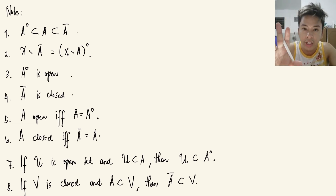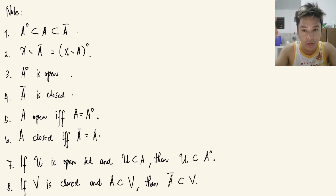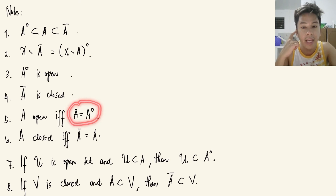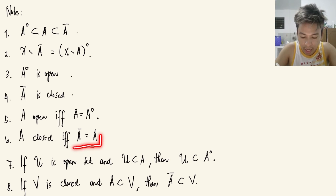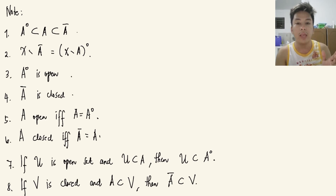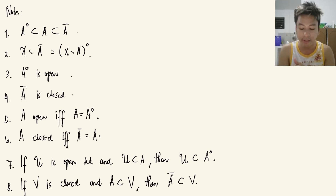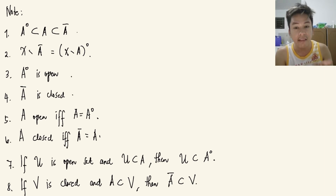Number three: the interior of a subset of a topological space is open, and the closure is closed. Number four: A is open if and only if A equals its interior. Number five: A is closed if and only if A equals its closure. Number seven: if U is an open set and U is a subset of A, where A is a subset of topological space X, then U is also a subset of the interior of A.